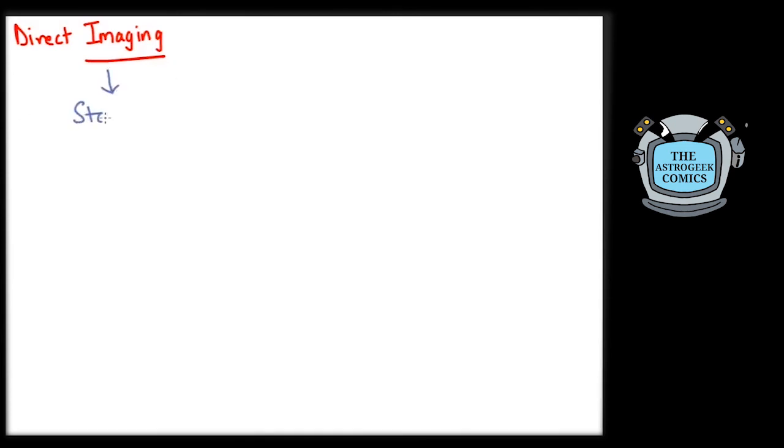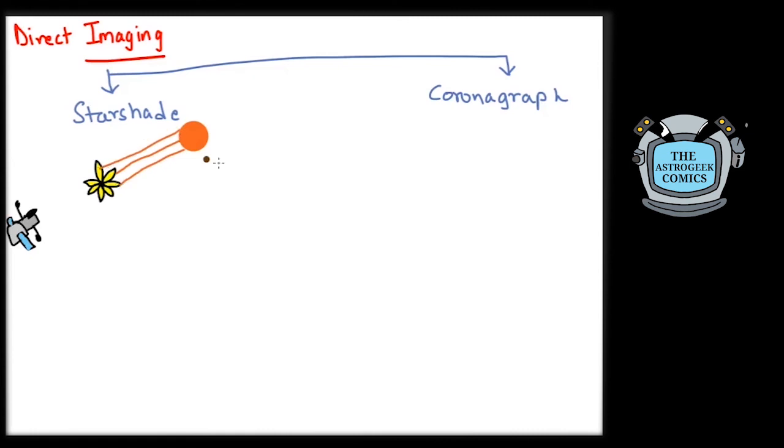Two technologies being explored to make direct imaging more practical are starshade and coronagraph. A starshade is a flower-like shield which will be launched to space along with a space telescope and be located very far away from it. This shade will selectively block out any light from a star so that the dim planet can be detected by the telescope.